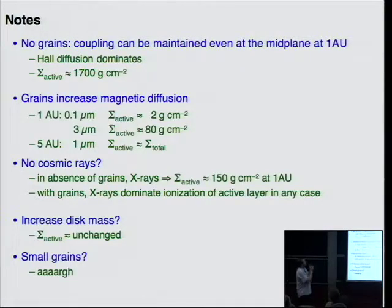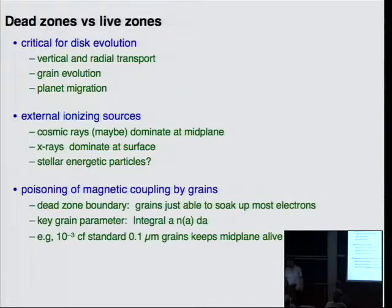So the executive summary. Hall diffusion is quite important when there's no grains. The active layer, if I multiply by two because there's a top and the bottom, is around 1700 grams per square centimeter. Active in the linear sense of the word active. And if you add grains, that causes you all kinds of trouble. You can really hardly have much of an active layer at all. But if you grow grains at one AU up to three microns, you're up to 80 grams per square centimeter. That starts to get interesting in terms of an active surface density. Five AU is not too hard. If there's no cosmic rays, well, x-rays can do the job to reasonable amounts, as long as there's not too many grains. Increase the disk mass while we're talking surface density, so we're okay. Small grains will really kill you here. So you have this issue.